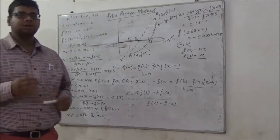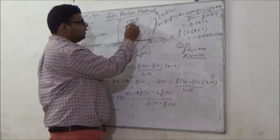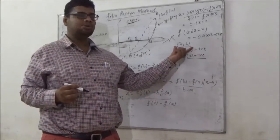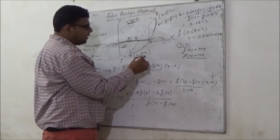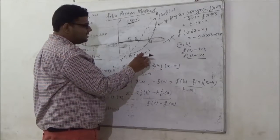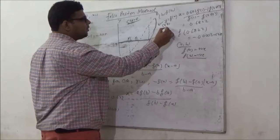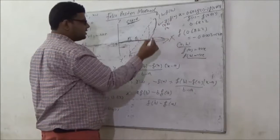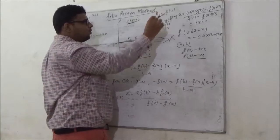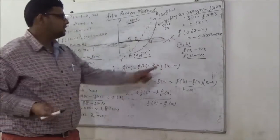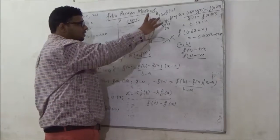In the false position method, you draw a chord at the extremities of the chosen interval. If the interval is a comma b, then the coordinates of the extremities are: first point x1, y1 = (a, f(a)), and second point x2, y2 = (b, f(b)). So these are the coordinates of the extremities of the chord.